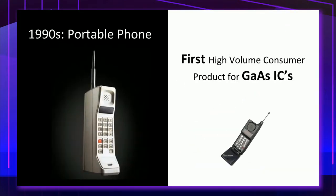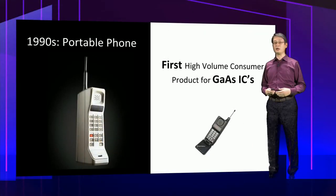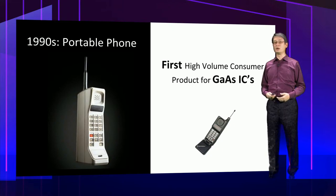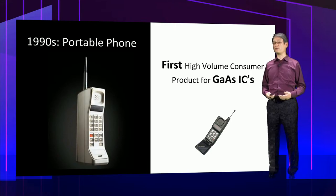Mobile phones were the first consumer product to bring gallium arsenide ICs into true volume production. Even now, we estimate that around 50% of gallium arsenide ICs are used for smartphones.